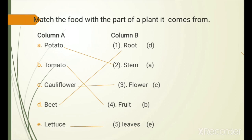Match the food with the part of a plant. Column A: potato, tomato, cauliflower, beet, lettuce. Column B: root, stem, flower, fruit, leaves. Potato is a stem. Tomato is a fruit. Cauliflower is a flower. Beet is a root vegetable. Lettuce is a leaf.